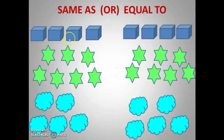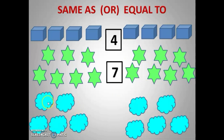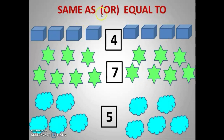Now next is same as or equal to. Same as or equal to means both sides should be the same number. Let's check: one, two, three, four — this side; and one, two, three, four — same four on the other side. Then stars: one through seven on one side, one through seven on the other. Again five on each side. So both sides it is the same — we say it is same as or equal to.